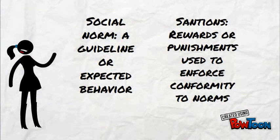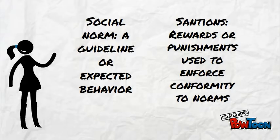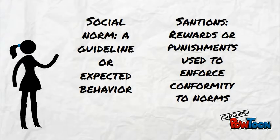To understand social norms and sanctions, we first must define them. A social norm is a guideline or expected behavior, whereas a sanction is a reward or punishment used to enforce conformity to norms.